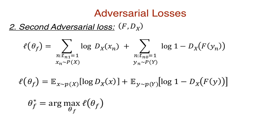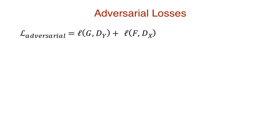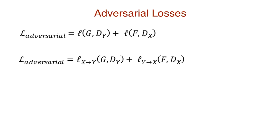Theta F is the set of parameters of the second GAN to be computed by maximizing this likelihood. Since it is the set of parameters that discriminator D-X needs to maximize and generator F needs to minimize, let's write this in the form of a minimax objective. Combining the objectives for these two GANs, we get the overall adversarial objective. The first term is computed when the X domain is the input and Y domain is the output, while the reverse is true for the second term. The adversarial loss is just the negative of this value — the negative log-likelihood.